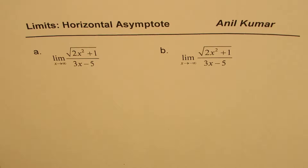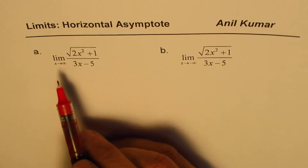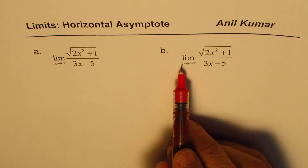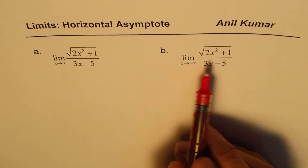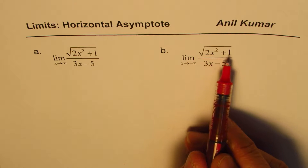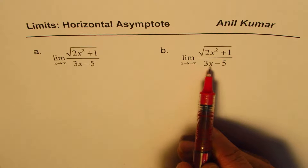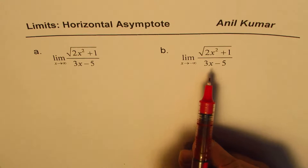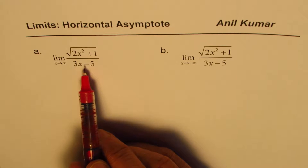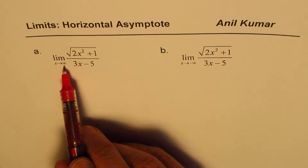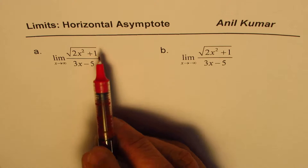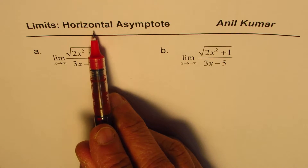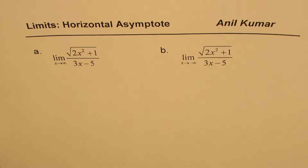I'm Anil Kumar sharing with you a question on limits. We'll find the limit when x approaches positive infinity and when x approaches negative infinity for the function which is square root of 2x squared plus 1, divided by 3x minus 5. As you know, if the limit exists — meaning as x approaches infinity, the function approaches a value — then that value will give a horizontal asymptote. That is the connection between limits at infinity and horizontal asymptotes.